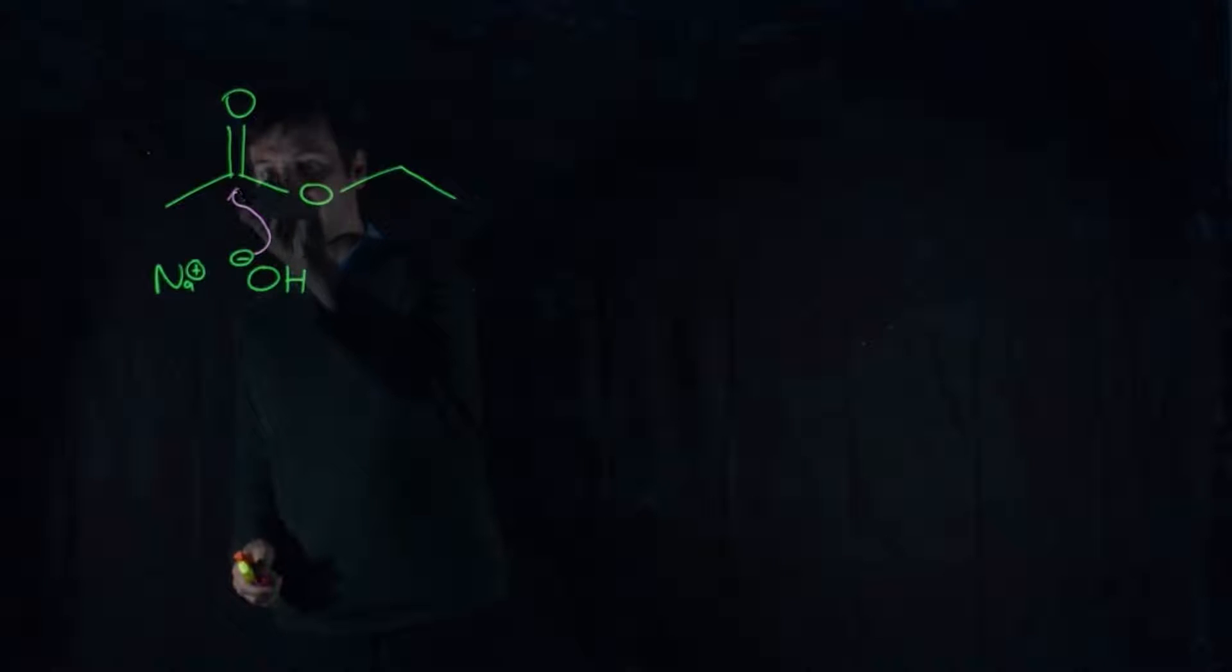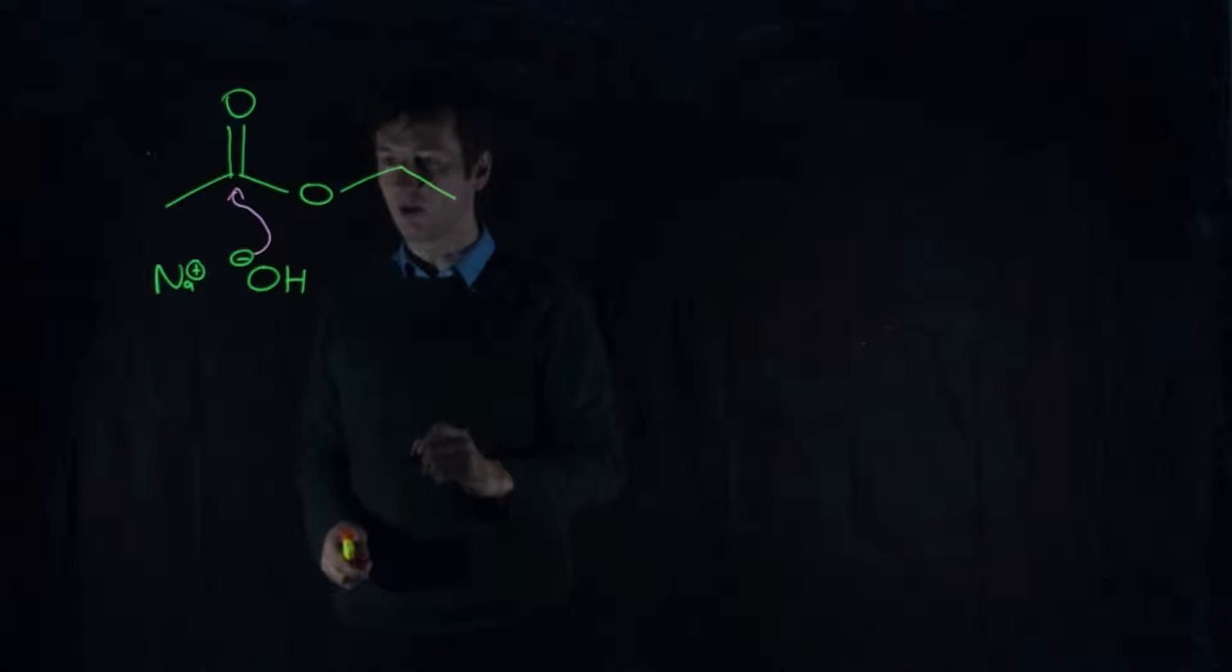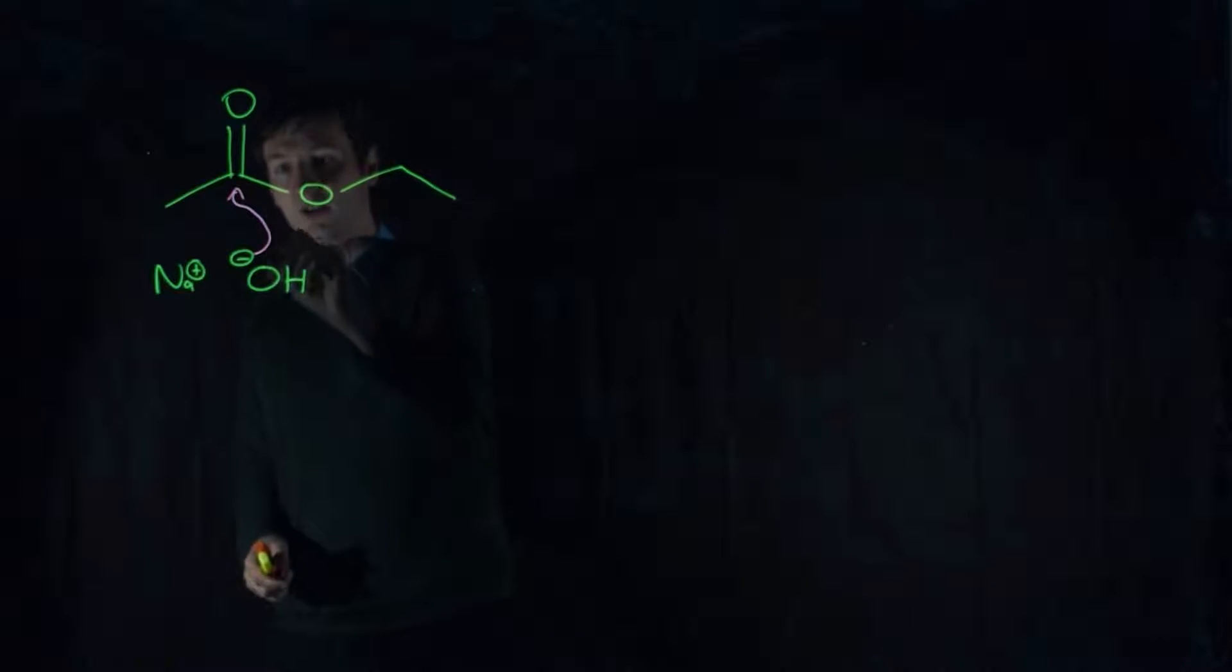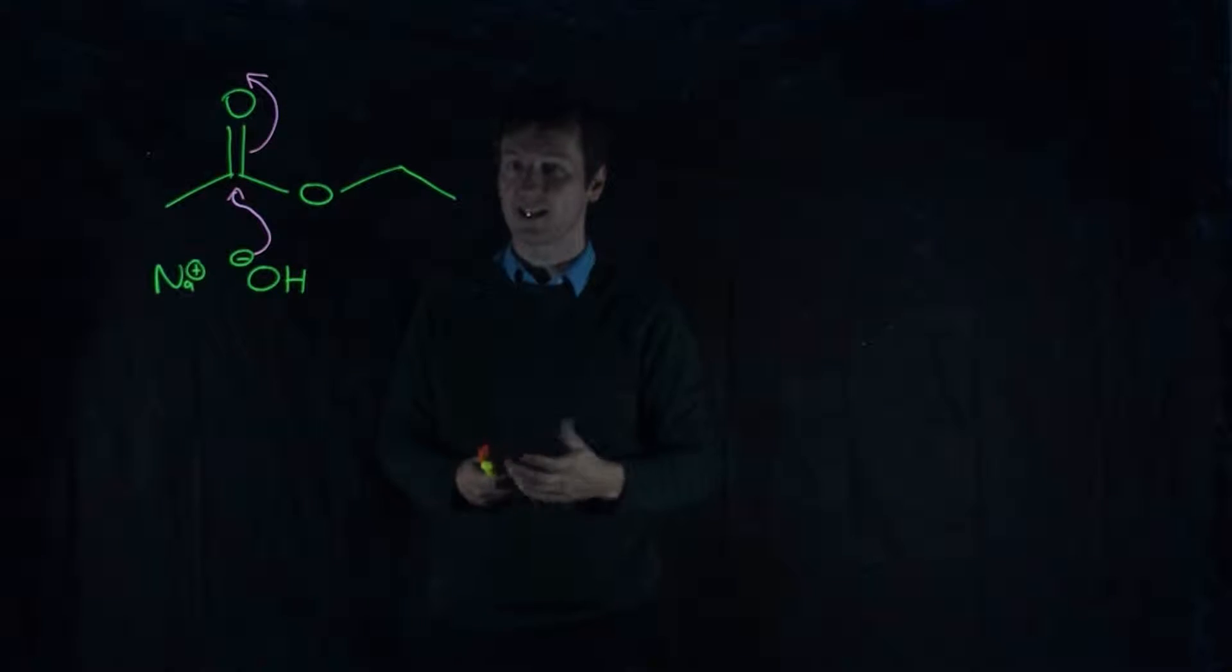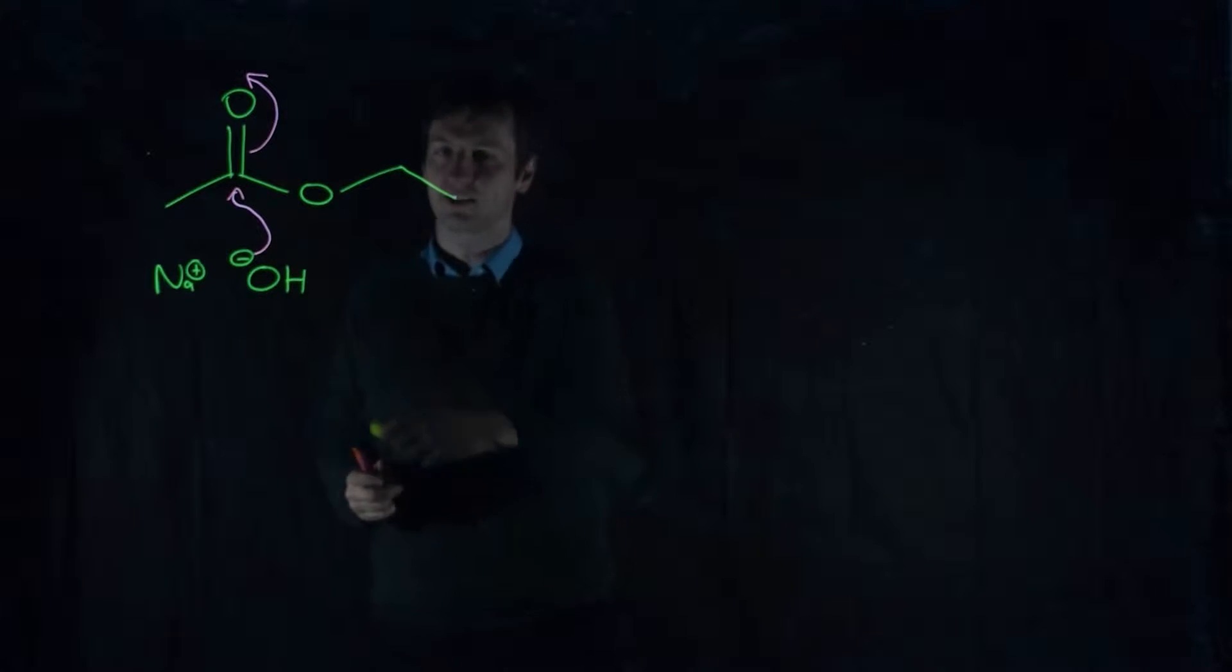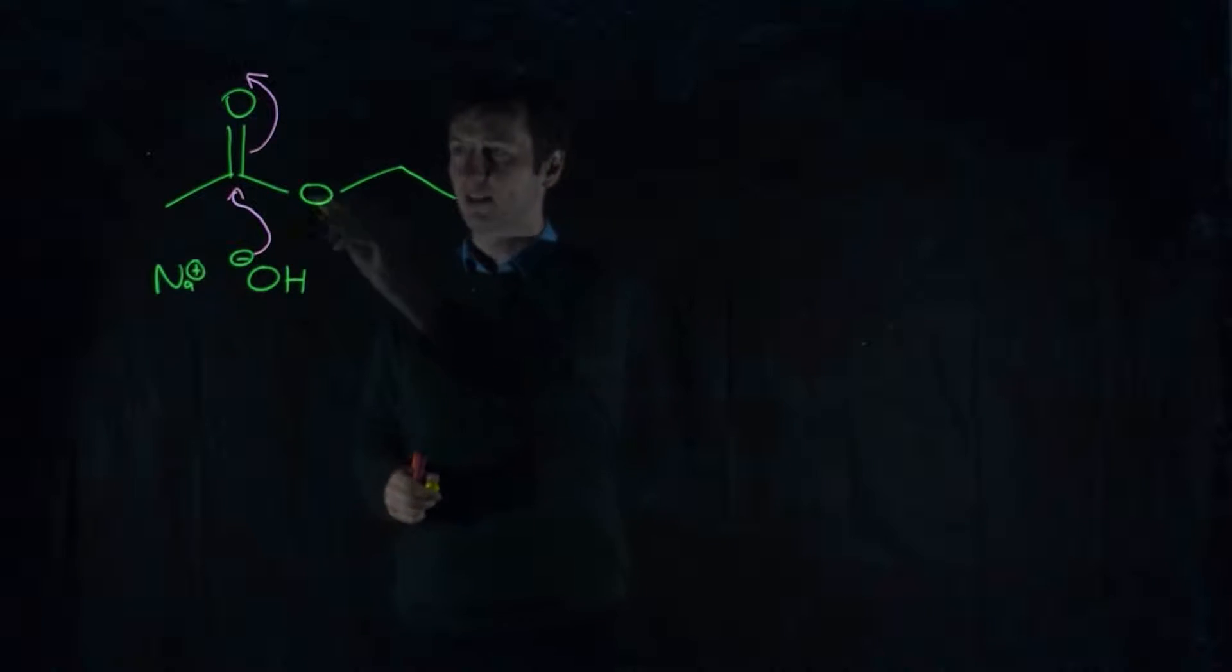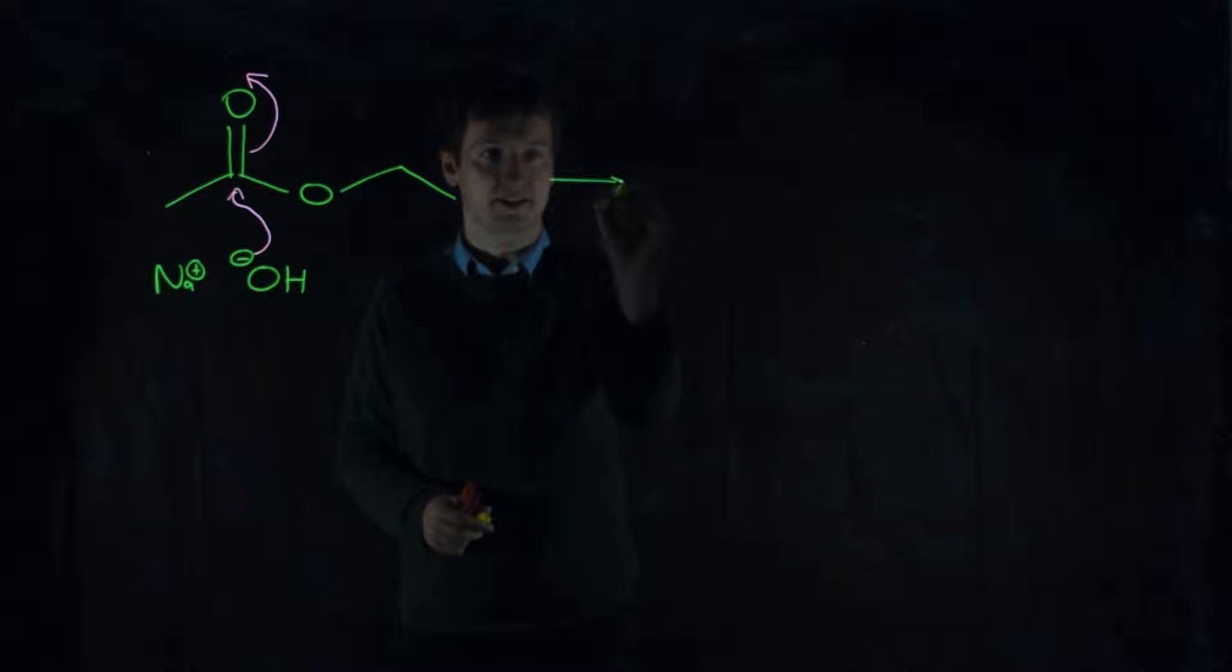And it is going to attack the carbonyl carbon. And if we form a new carbon-oxygen bond, this carbon can only have four bonds. So we have to break that and form our tetrahedral intermediate. And that's a very classic step when we react to carbonyl carbons. Attack the carbonyl carbon and form the tetrahedral intermediate. So, on to the next step.